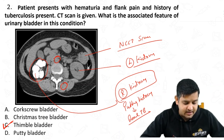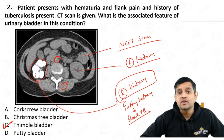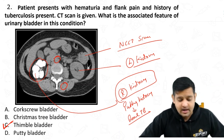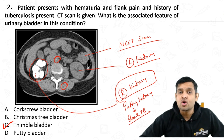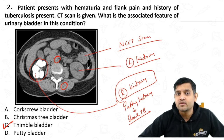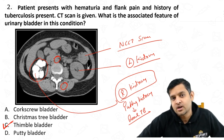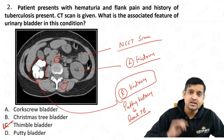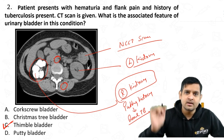Christmas tree bladder is a feature of neurogenic bladder. There is no corkscrew bladder — you have a corkscrew ureter, which is a feature of genitourinary TB. The answer is thimble bladder.